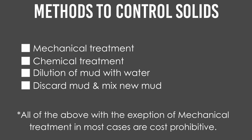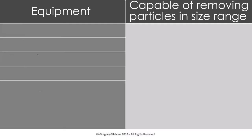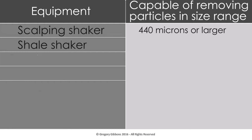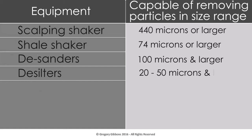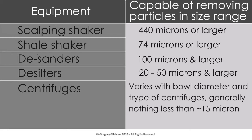It is important to realize the limitation of each piece of equipment. The scalping shaker will remove 440 microns or larger. The fine mesh shale shaker will remove 74 microns or larger. The desanders will remove 100 microns or larger. The desilters handle the 20 to 50 micron range and larger. Centrifuges, dependent upon the bowl size and g-force, will generally remove nothing less than 15 microns. Correctly implemented, each piece of mechanical equipment is effective only within a certain particle size range. Utilizing all or a combination of the above equipment throughout the drilling operations would give maximum benefits and result in a cost-effective method to control the buildup of solids and fines.